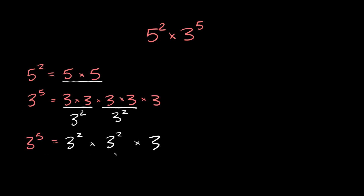Now that we broke this down and we have matching exponents, let's rewrite our problem. So again, we have 5 squared times — and instead of 3 to the 5th, let's write it how we broke it down — so 3 squared times 3 squared times 3.